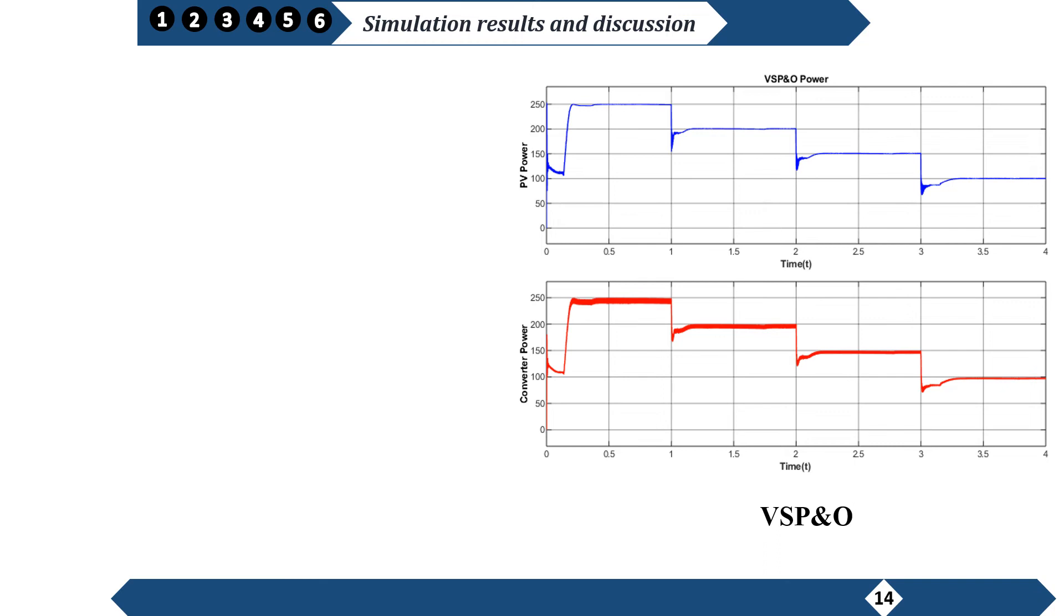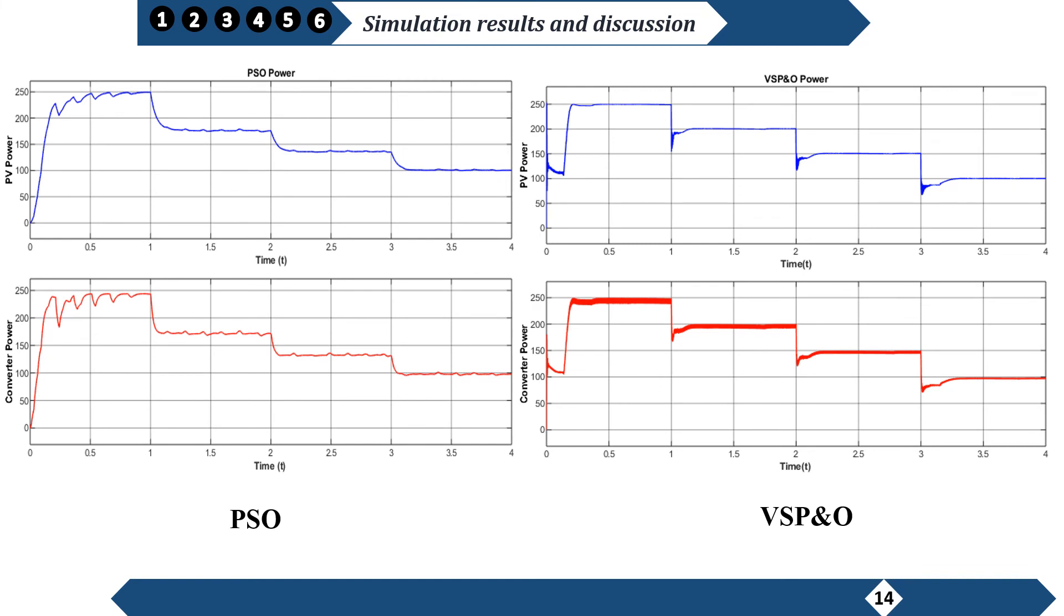The results of the simulation show that the algorithms VSP&O give more important results than the other. This algorithm is based on the variation of the step size, which reduces the oscillation around the MPP with a faster response to reach it.